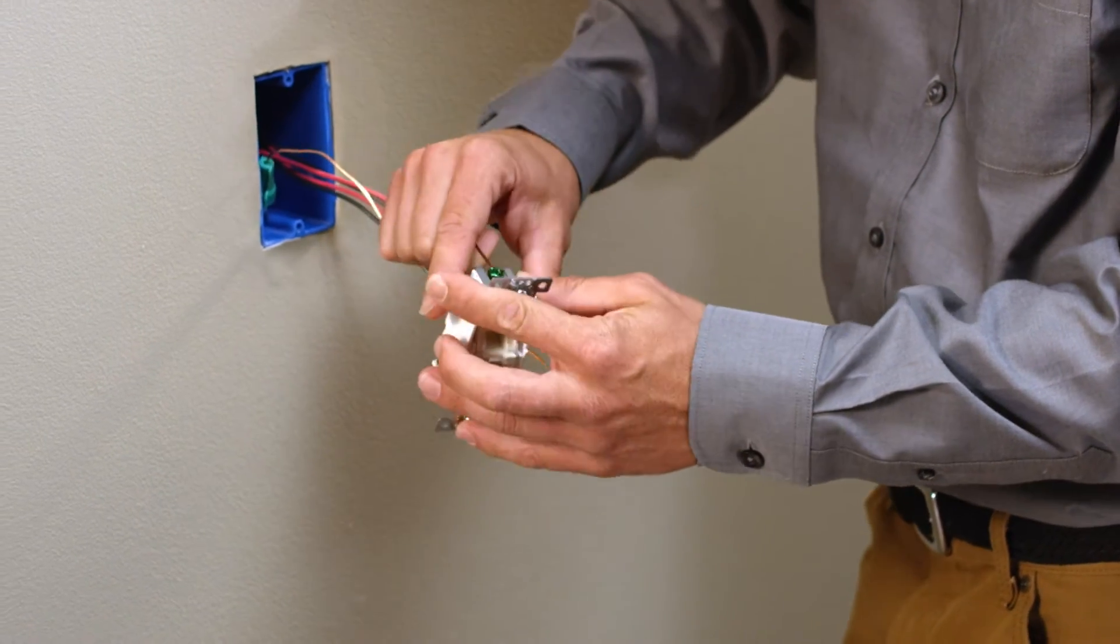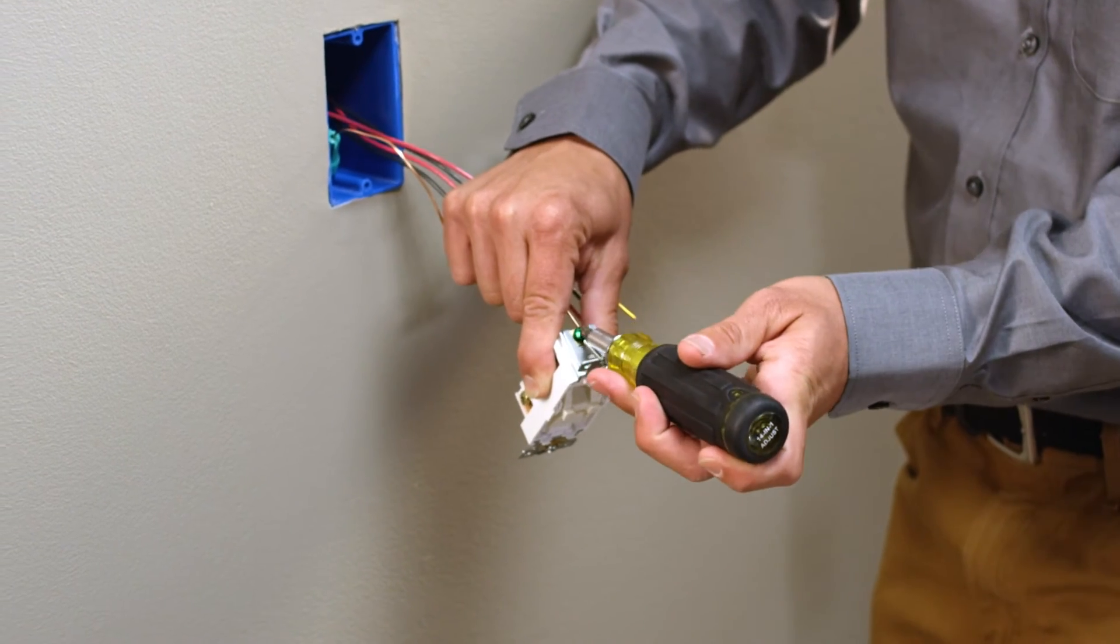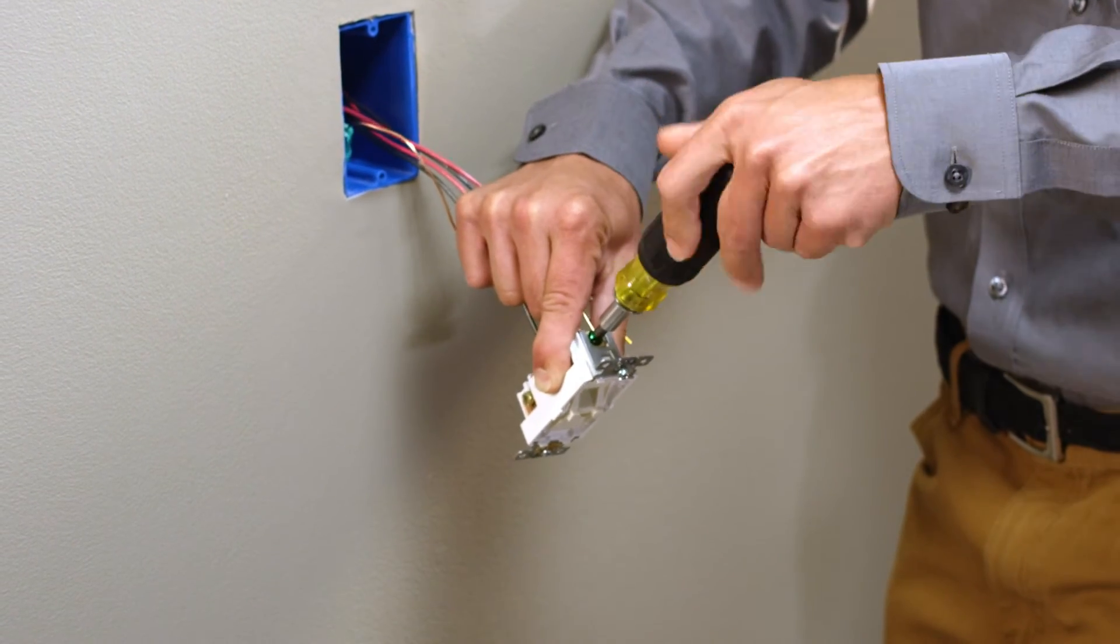First, make sure your neutral and ground wires are connected. Then, take a lead from the ground bundle and wire it to the green screw on the single pole switch.